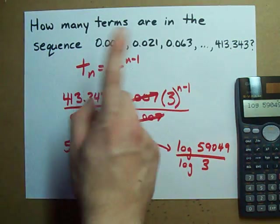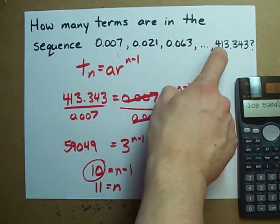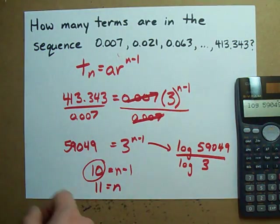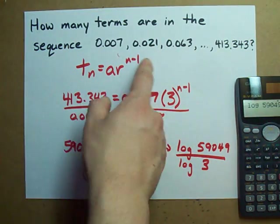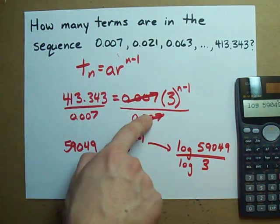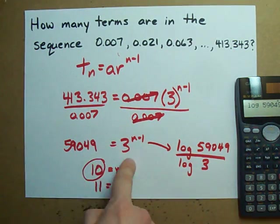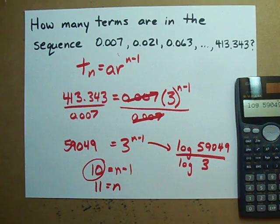Anyways, when you're looking for whatever term this is, when you're given the last term and you're looking for the n, you've got to solve it this way. Plug in the numbers, divide out your a like we did, then solve for your exponent, either by guessing and checking or by using this little trick. Best of luck.